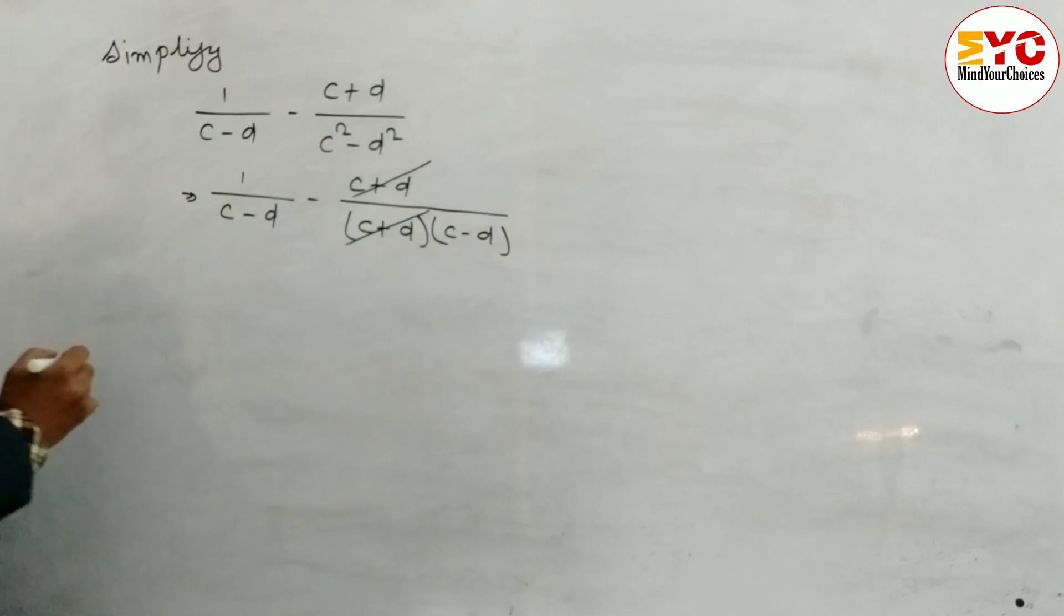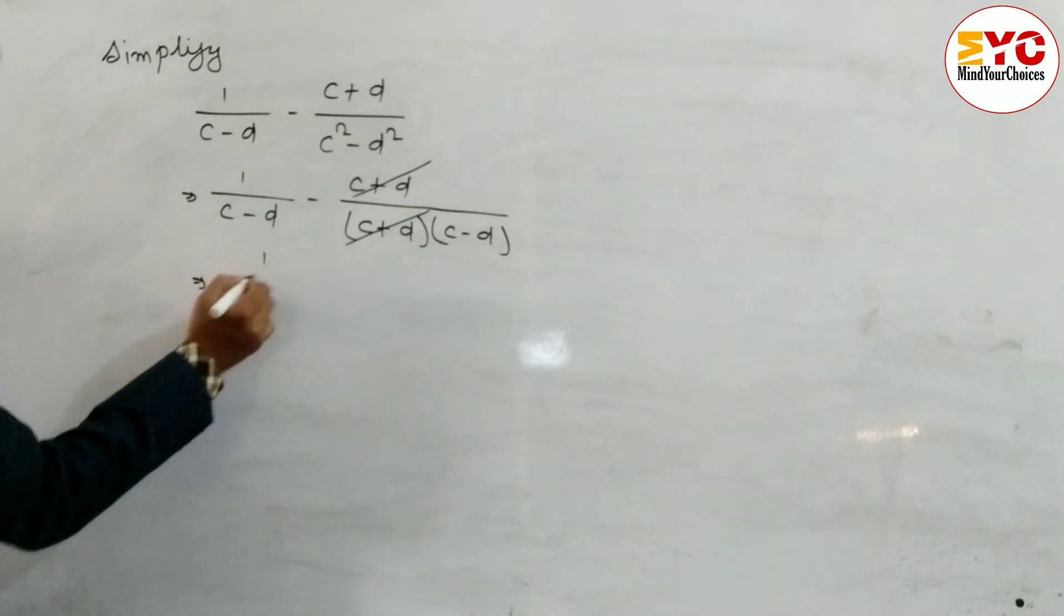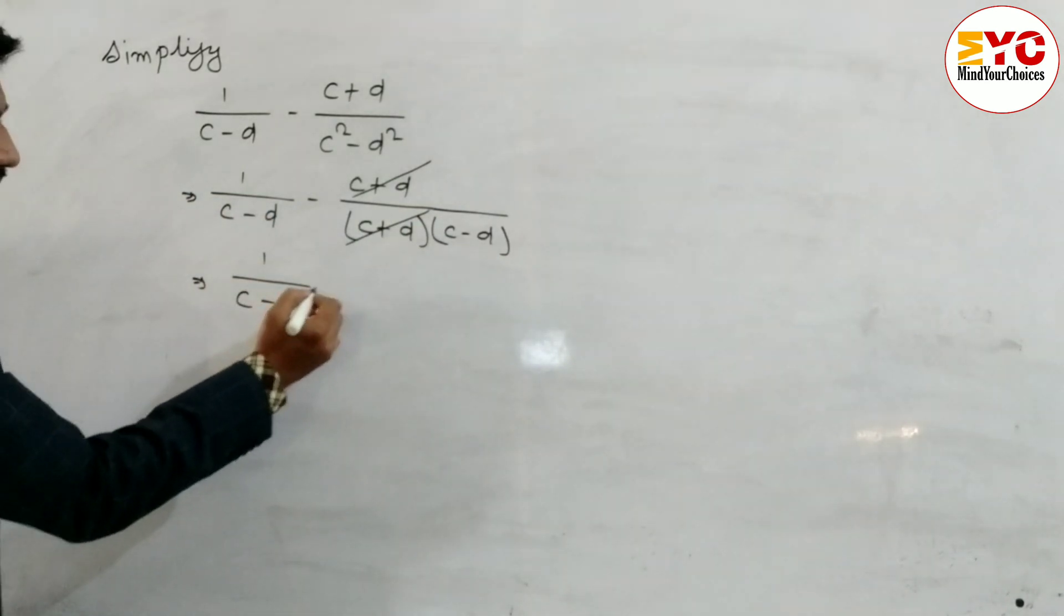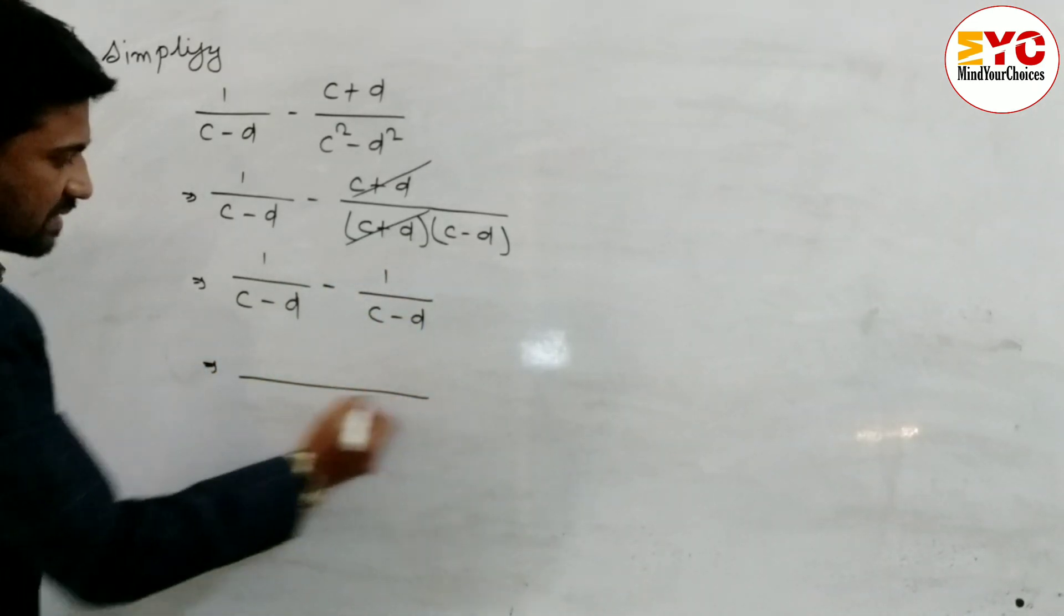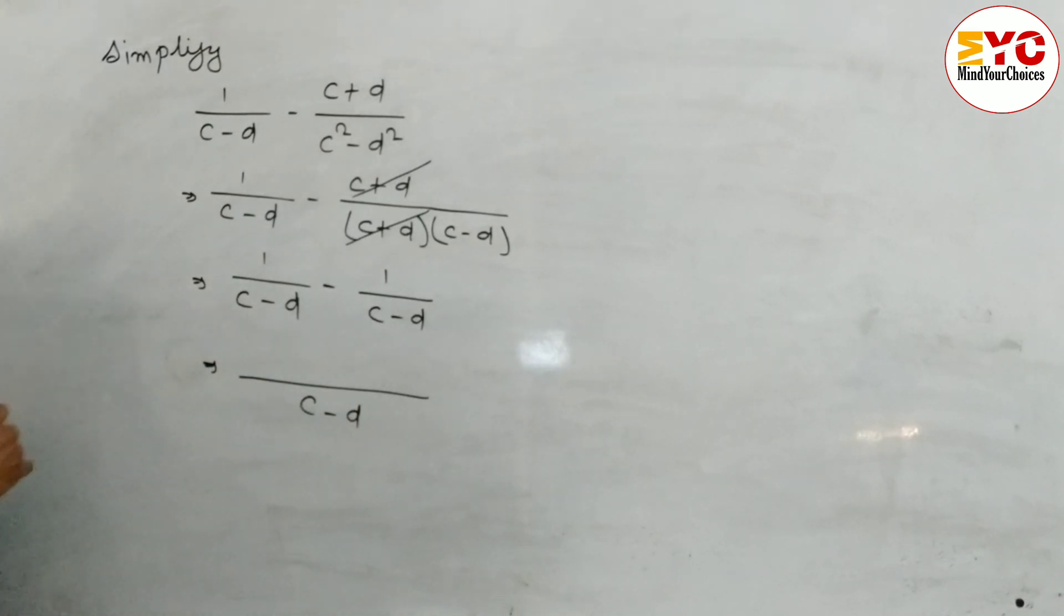We can reduce this c plus d with c plus d, so now remaining is 1 by c minus d minus 1 by c minus d. Now we have to take LCM and the LCM is c minus d.